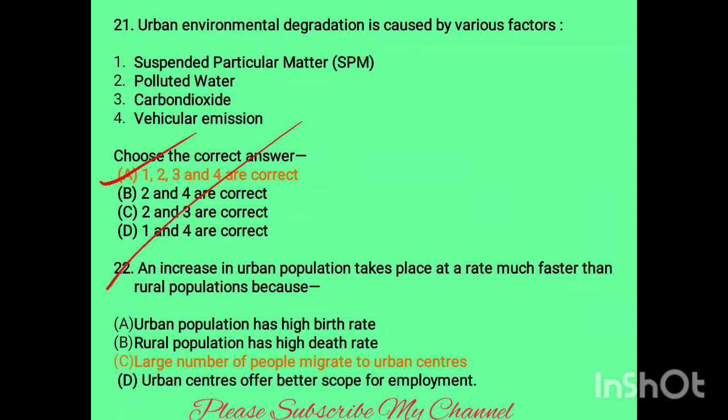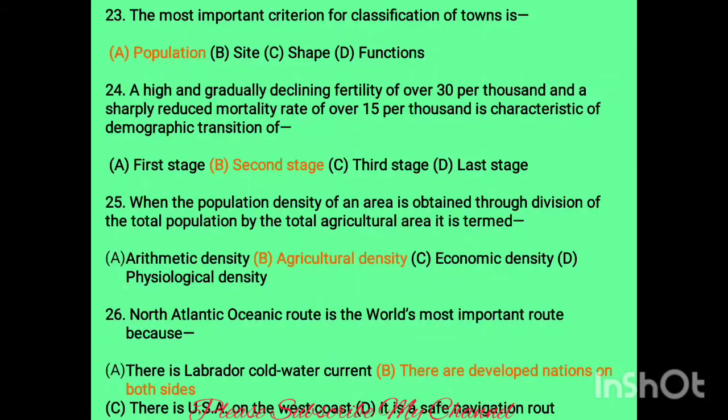Question twenty-two: an increase in urban population takes place at a rate much faster than rural population because — options include urban population has high birth rate (incorrect), rural population has high death rate (incorrect), and large numbers of people migrate to urban centres. Migration to urban centres is the main reason urban population increases at a much higher rate.